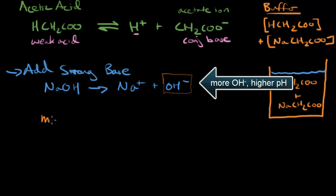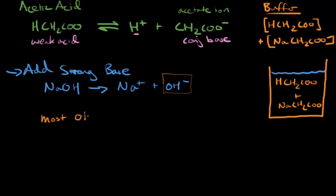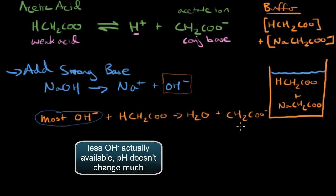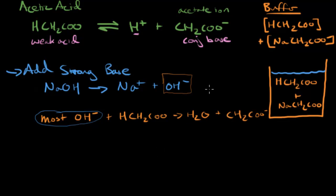However, just like we saw with the acid, most of the OH minus ions produced here would instead undergo a neutralization reaction with the acetic acid present in the buffer to produce water and the acetate ion, which is the conjugate base again. And because most of this OH is used up in this neutralization reaction, we don't see the pH increase as much as it would otherwise.